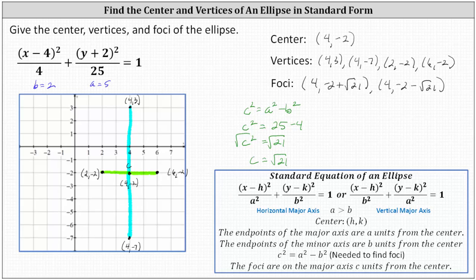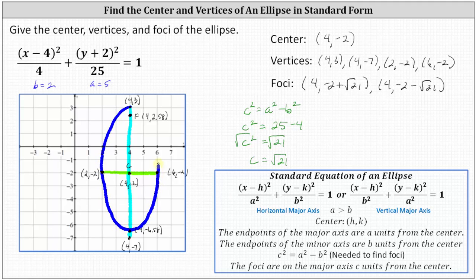Now let's plot these points on the coordinate plane. For the first focus, negative two plus square root 21 is approximately 2.58, so (4, 2.58) is approximately here. For the second focus, negative two minus square root 21 is approximately negative 6.58, so (4, -6.58) is approximately here. Let's go ahead and sketch the ellipse passing through the four vertices. I hope you found this helpful.